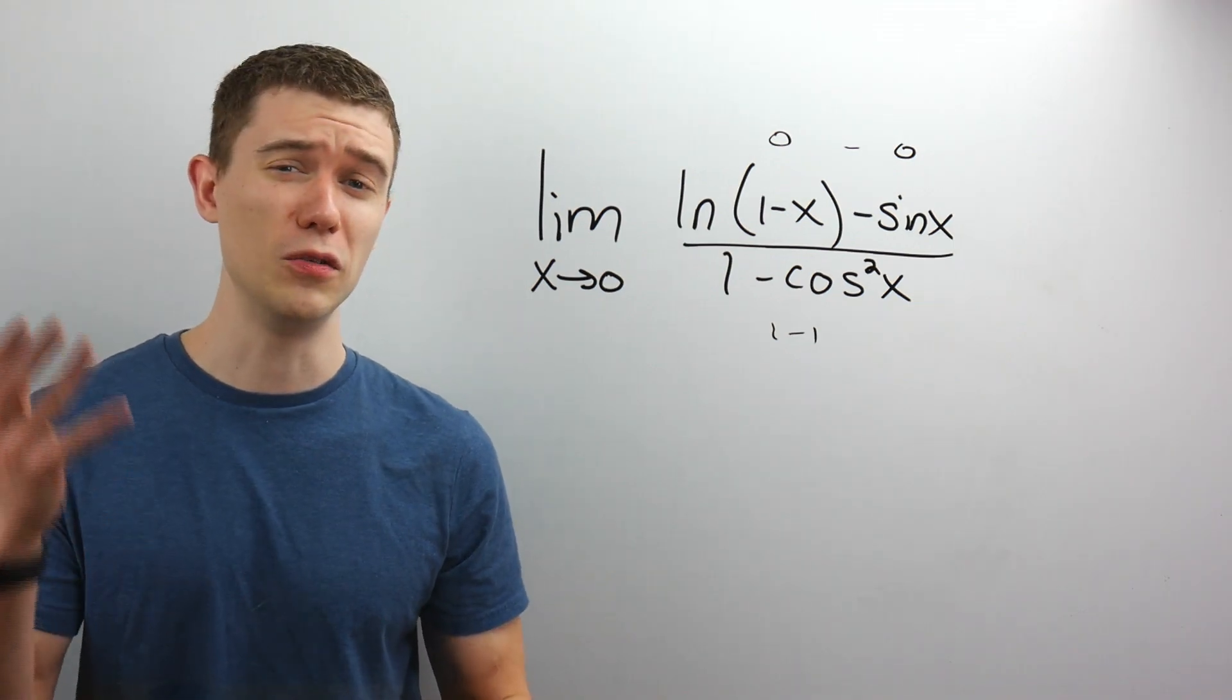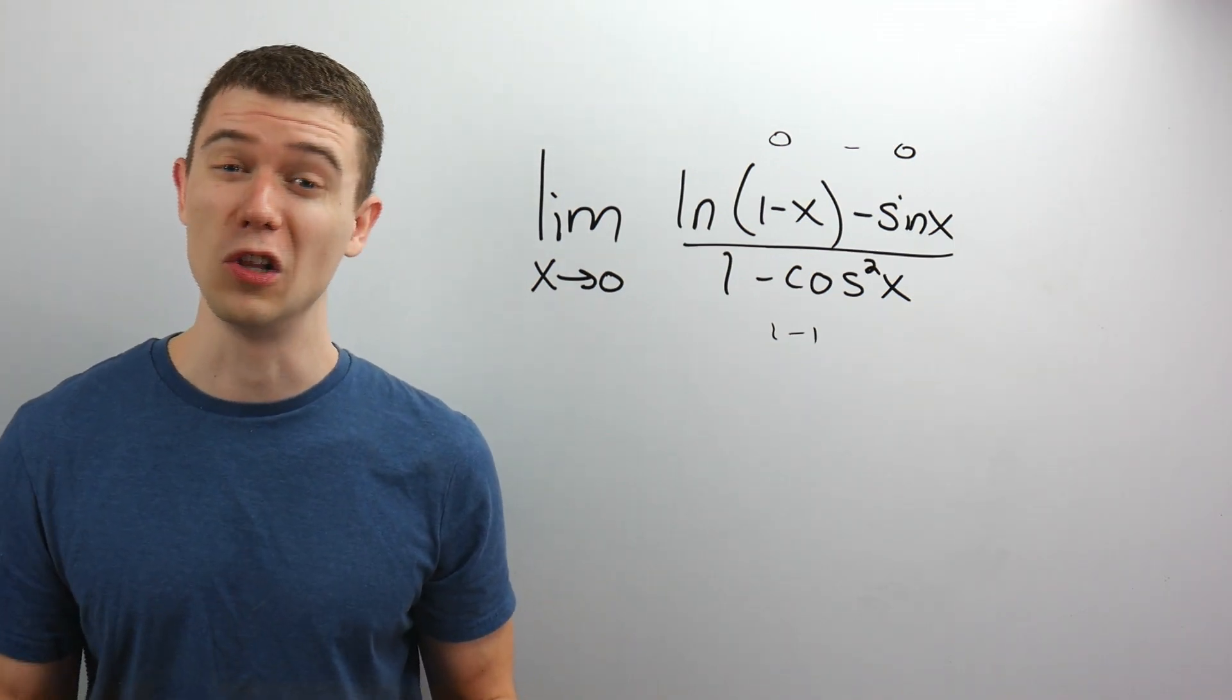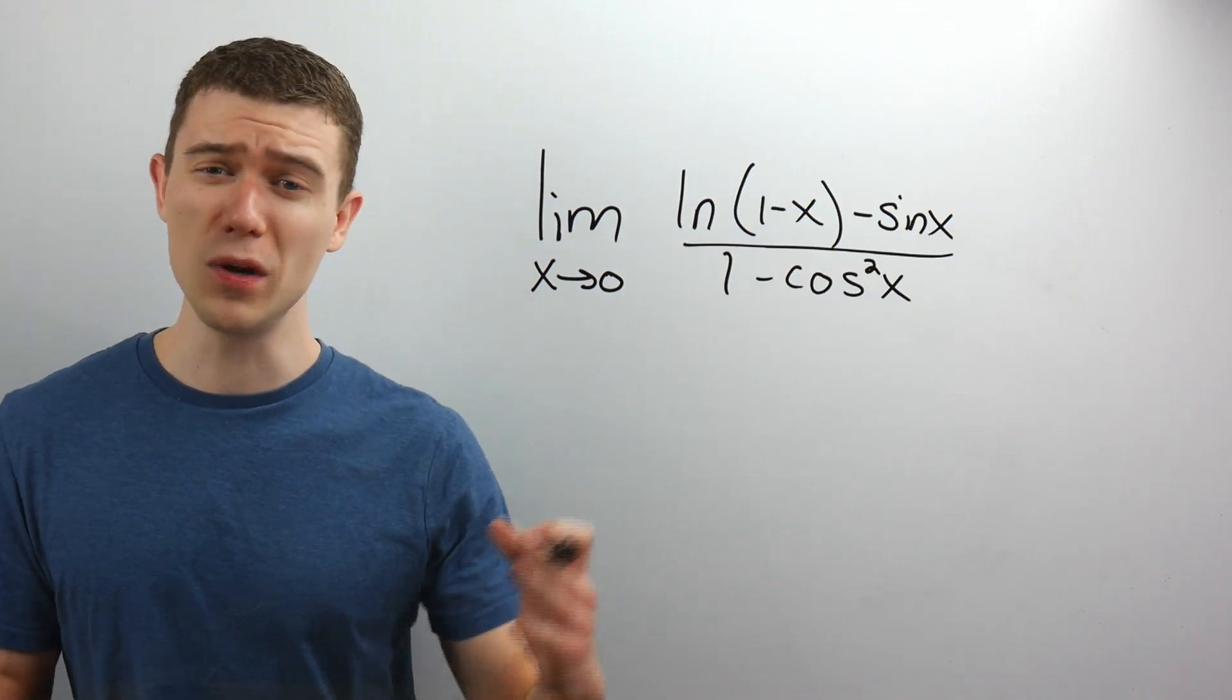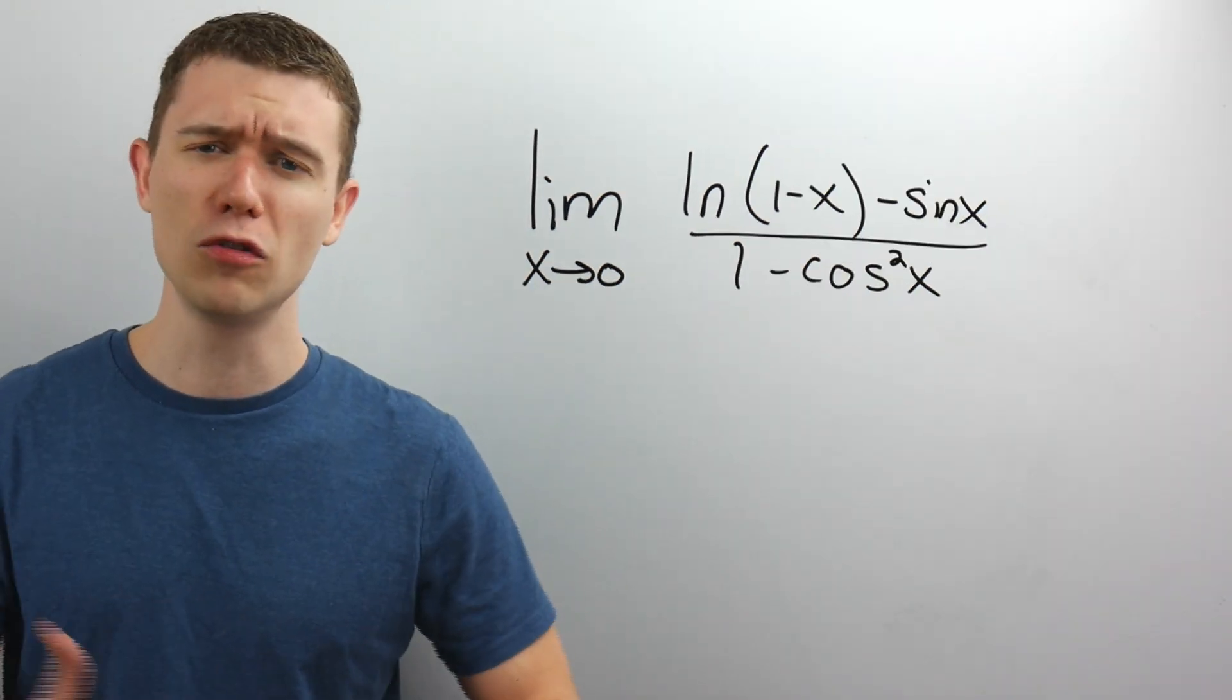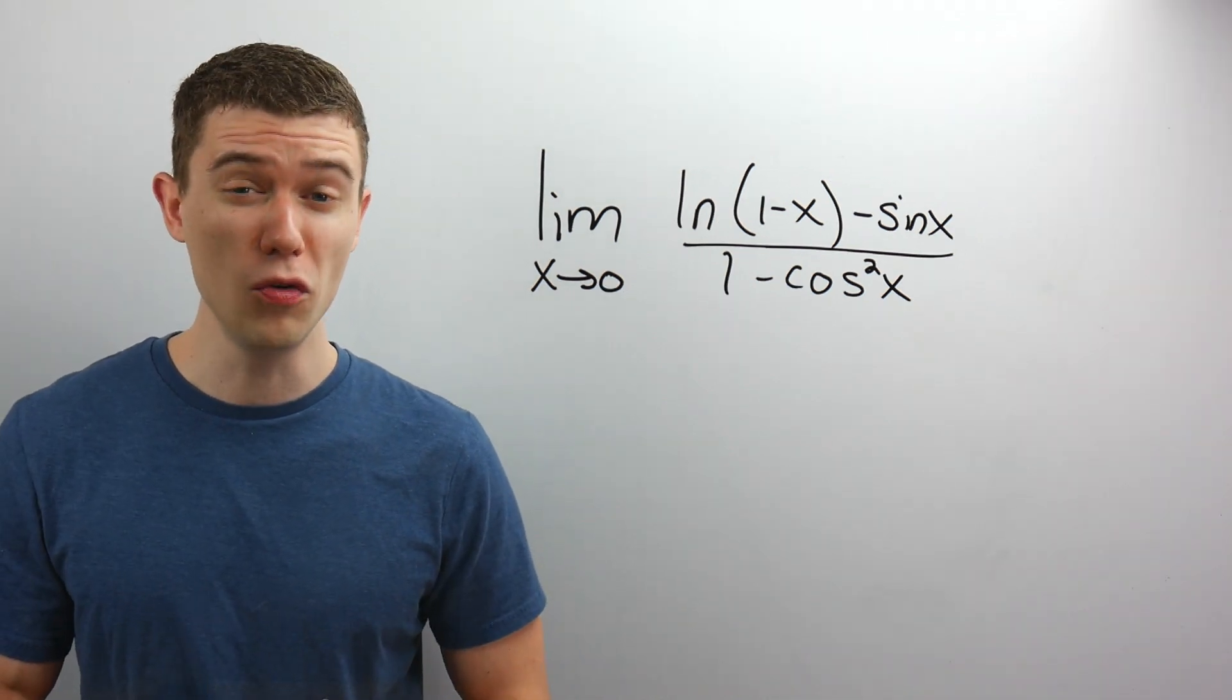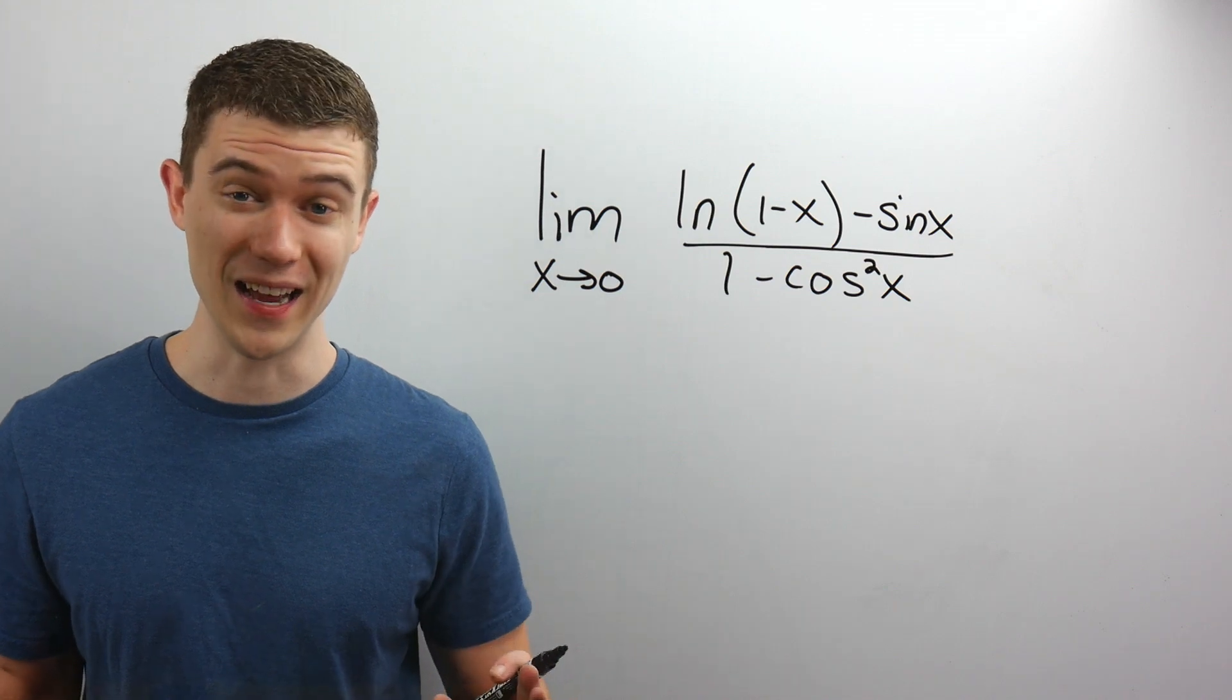But what we can do with this is we can use a very famous theorem, L'Hôpital's rule. And what L'Hôpital's rule says is if we get one of these indeterminate forms, namely 0 over 0 or infinity over infinity, we can take the derivative of the numerator over the derivative of the denominator and try the limit again.